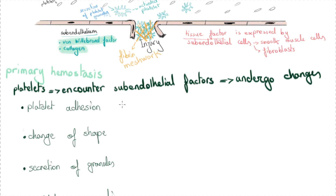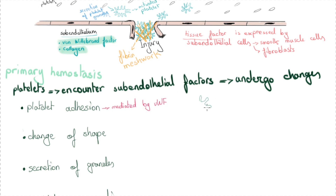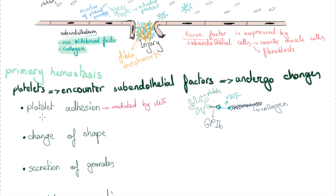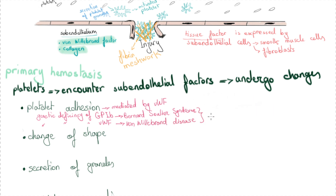Platelet adhesion is mediated by von Willebrand factor, which mediates the adhesion of the platelet surface receptor glycoprotein Ib (GPIb) to collagen — the subendothelial component exposed after injury. If either component is missing due to genetic deficiency, bleeding disorders result: genetic deficiency of glycoprotein Ib causes Bernard-Soulier syndrome, while genetic deficiency of von Willebrand factor causes von Willebrand disease. Both are bleeding disorders because without a proper platelet plug, bleeding cannot be stopped.